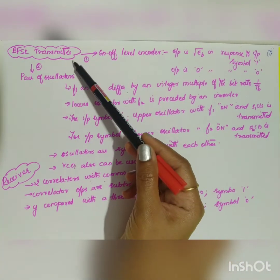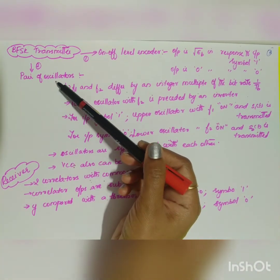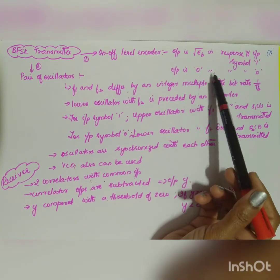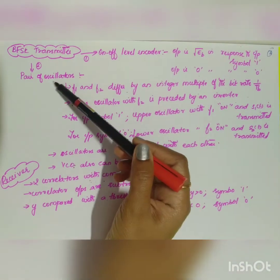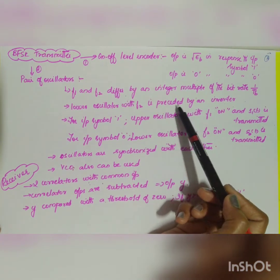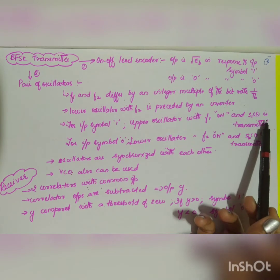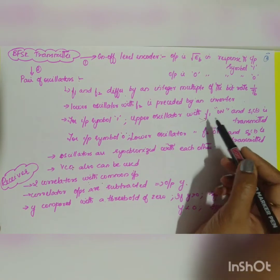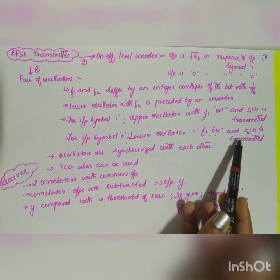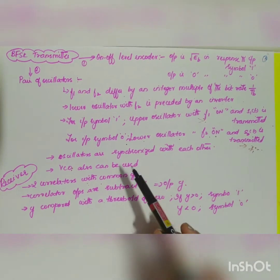The BFSK transmitter consists mainly of two parts: an on-off level encoder and a pair of oscillators. The encoder outputs √E_b for symbol 1 and 0 for symbol 0. The pair of oscillators have frequencies f_1 and f_2 differing by an integer multiple of the bit rate 1/T_b; the lower oscillator (f_2) is preceded by an inverter. For symbol 1, the upper oscillator (f_1) is ON and s_1(t) is transmitted while the lower oscillator is OFF. For symbol 0, the lower oscillator (f_2) is ON and s_2(t) is transmitted while f_1 is OFF. An alternative method is to use a voltage-controlled oscillator.